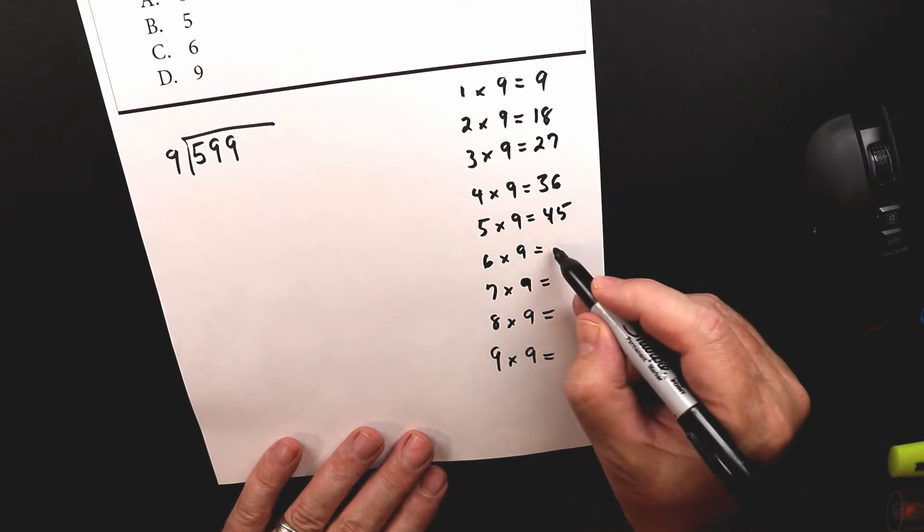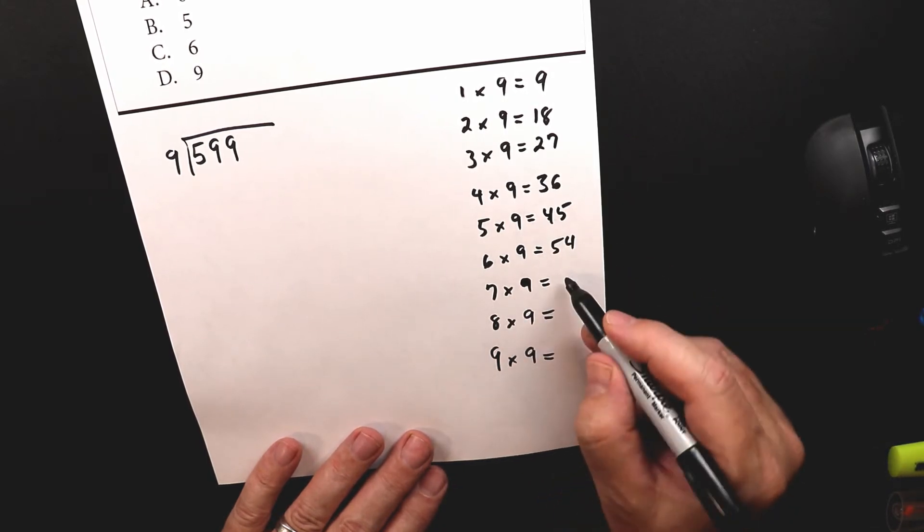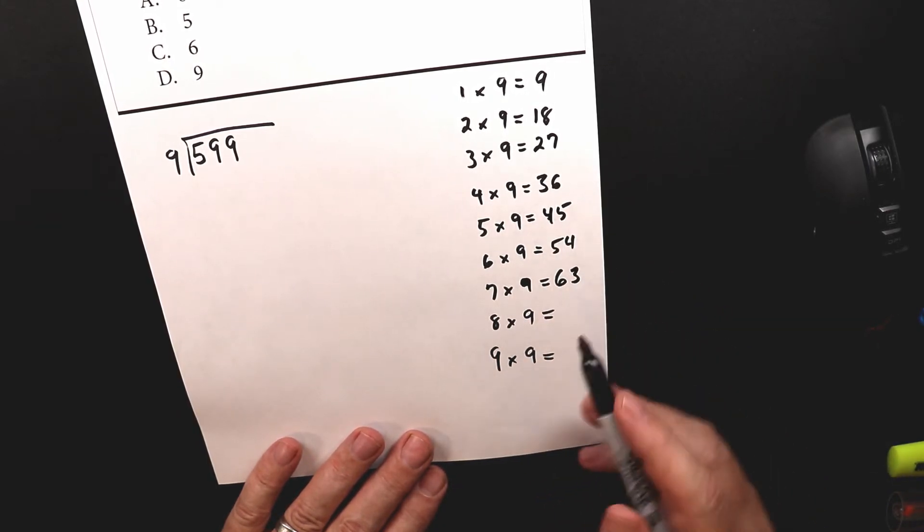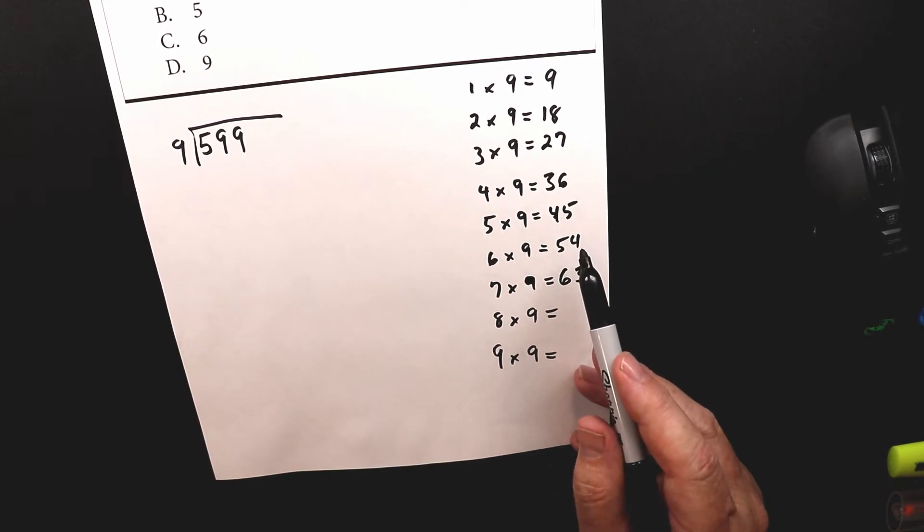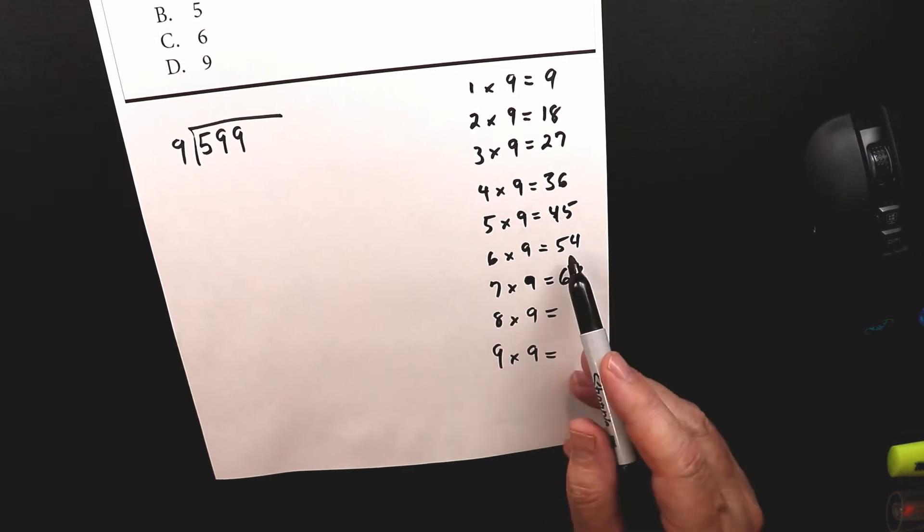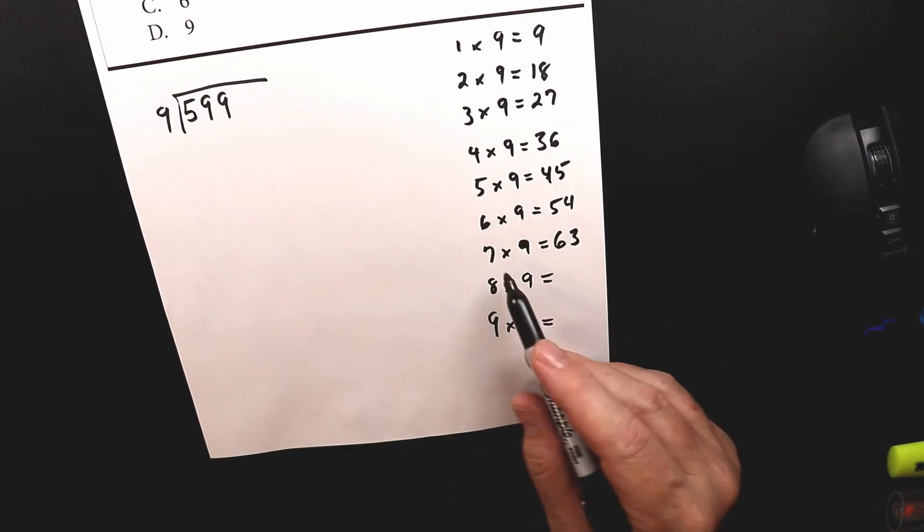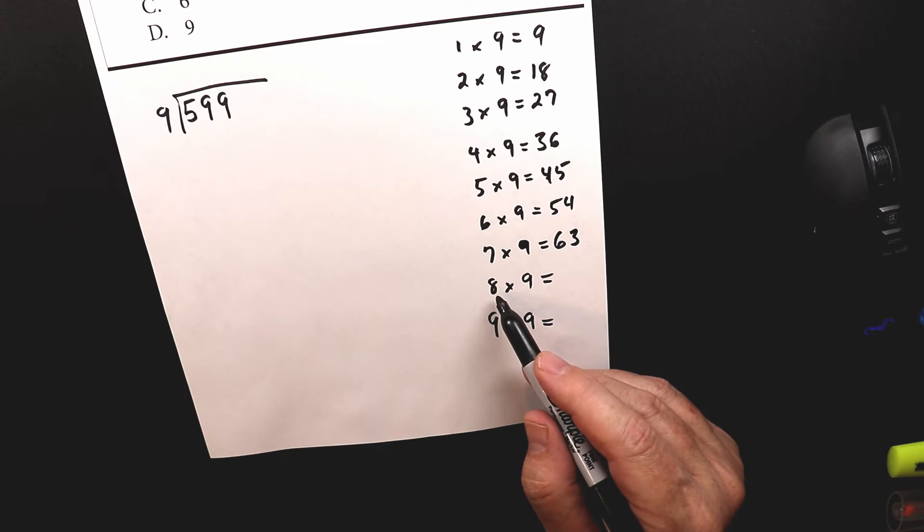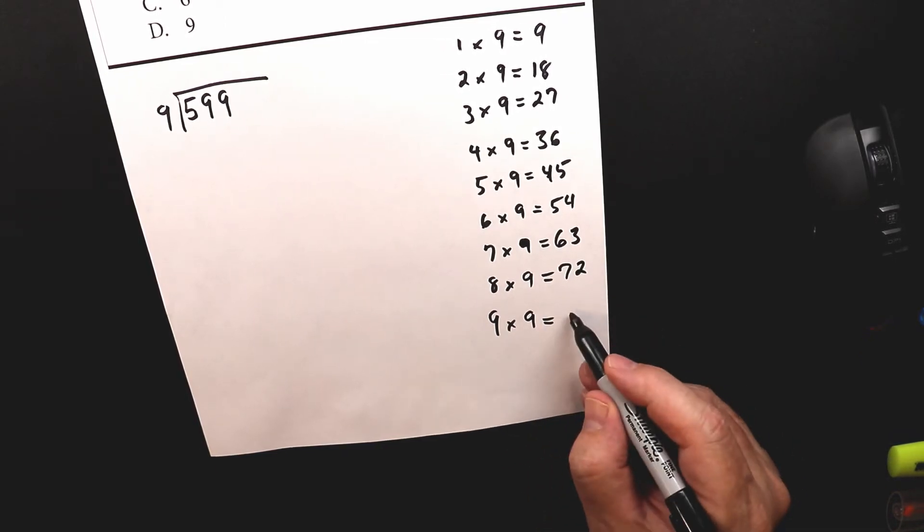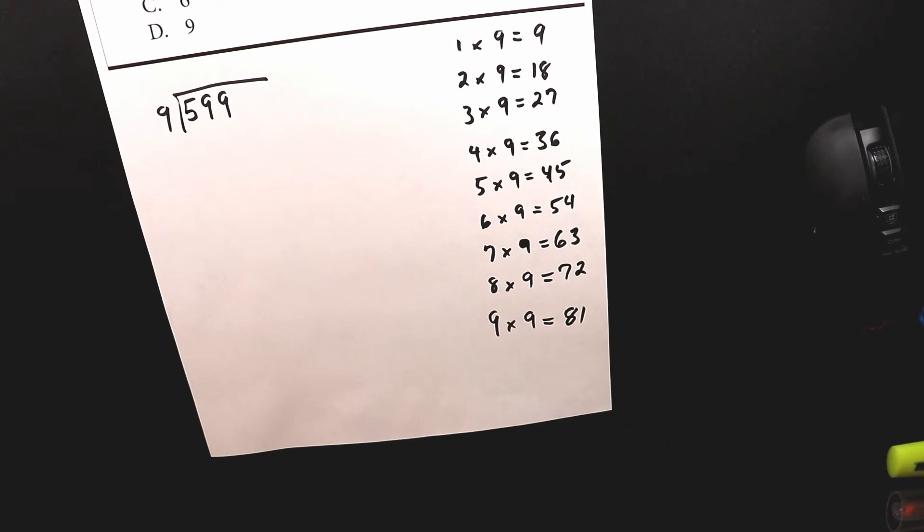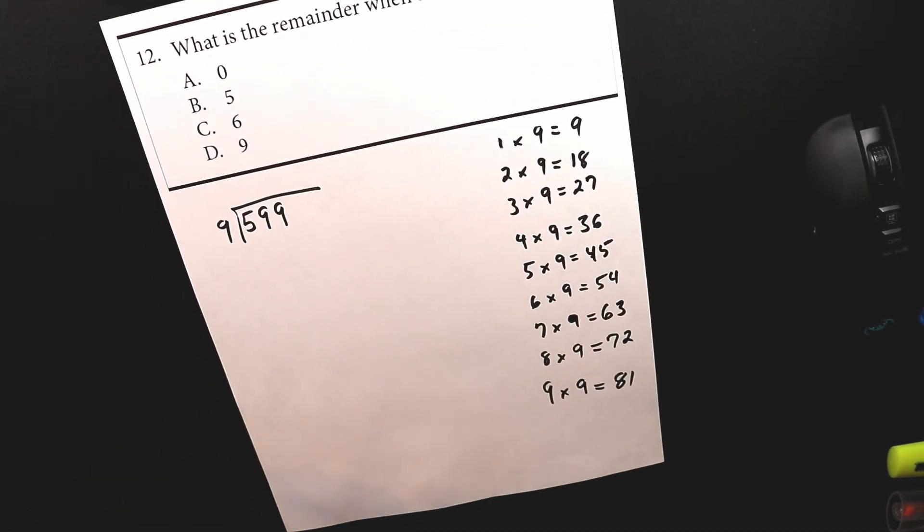Six times nine is 54. Seven times nine is 63. And I remember when I was a kid, six times nine, I always got that wrong for some reason. I still don't know why. I still kind of pause while I do six times nine. Anyway, seven times nine is 63. Eight times nine is 72. And nine times nine is 81. Boom. So there's your nine times tables.